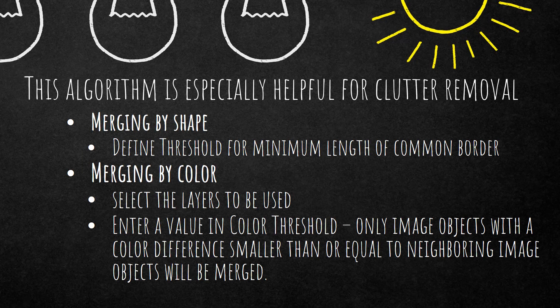This algorithm is especially helpful for clutter removal. There are two main settings: merging by shape and merging by color. Merging by shape is the default setting — it merges into the image object that shares the longest common border. You can also define a threshold for the minimum length of a common border, for example, requiring at least 70% shared border before merging.